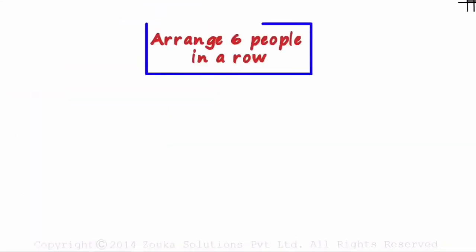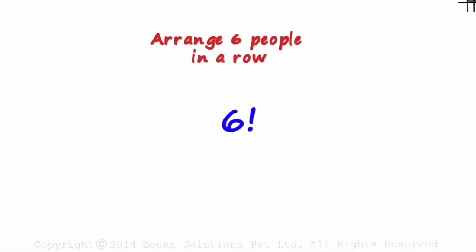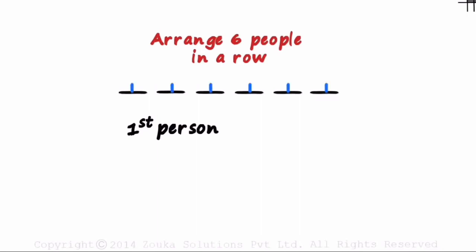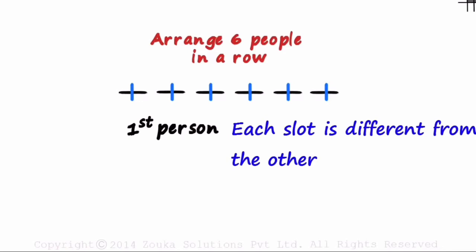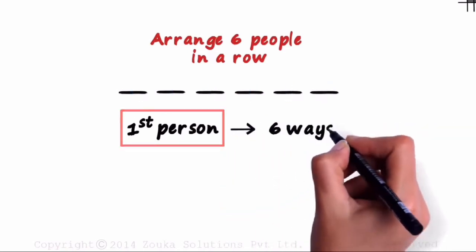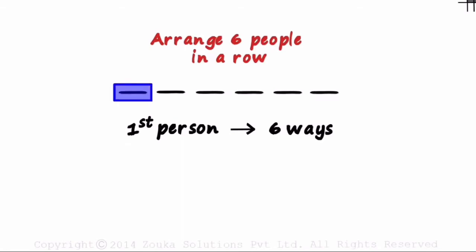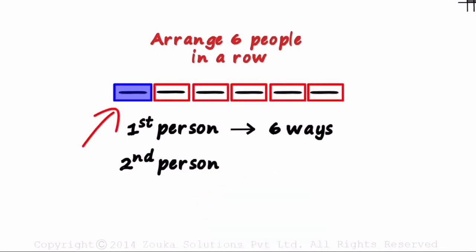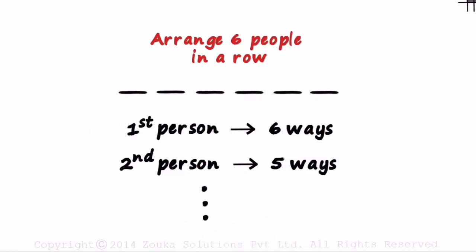Let's understand why. First, we need to know the number of ways in which we can arrange six people in a row. We know it's six factorial. But do you remember how we arrived at it? We had made six slots for the six people. The first question we asked was: in how many different ways can the first person be seated? He can be seated in any one of these six slots, and each slot is different from the other, so the first person can be seated in six ways. Then the second person has five remaining slots, and this goes on, giving us six factorial.